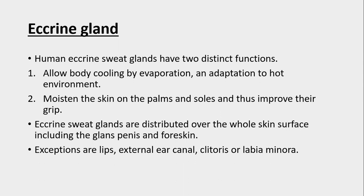The human eccrine sweat glands have two distinct functions: they allow body cooling by evaporation, which is an adaptation to hot environments, and they moisten the skin on palms and soles, thus improving their grip. The eccrine sweat glands are distributed all over the body including the glans penis and foreskin. However, exceptions where sweat glands are not present include the lips, external ear canal, clitoris, and labia minora.